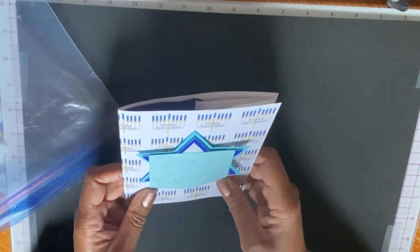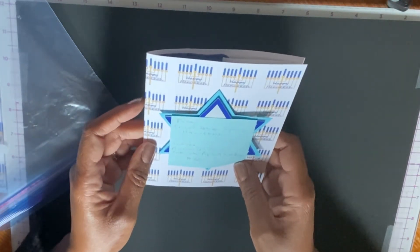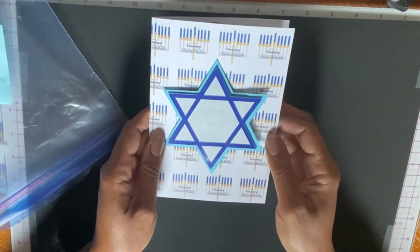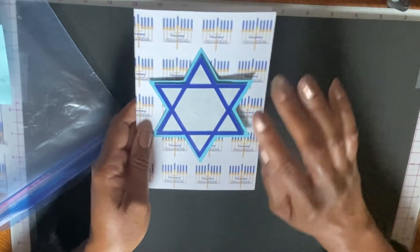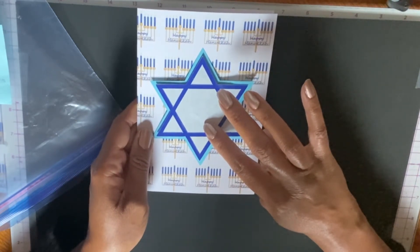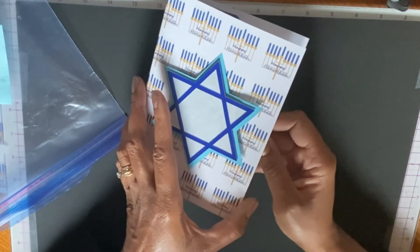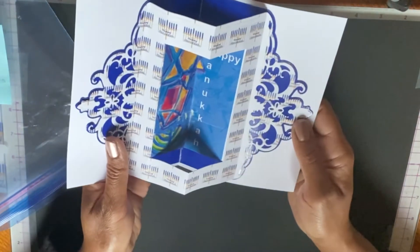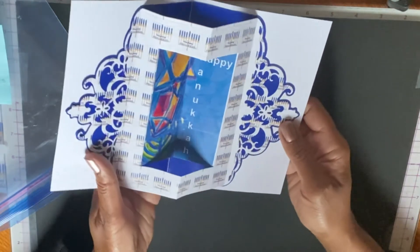This is a card that she created using the Anna Griffin intricate pop-out card die. This is the paper download from mckenziecreations.design. She put, I believe from Cricut Design Space, the Hanukkah emblem. The pop-out card is using the Anna Griffin intricate pop-out card dies. Oh wow, look at this. This is just amazing, Happy Hanukkah.